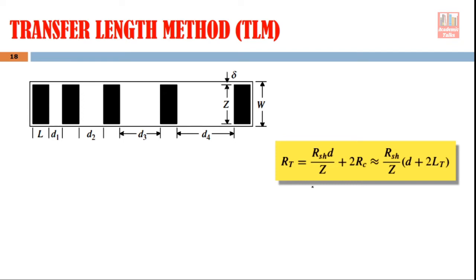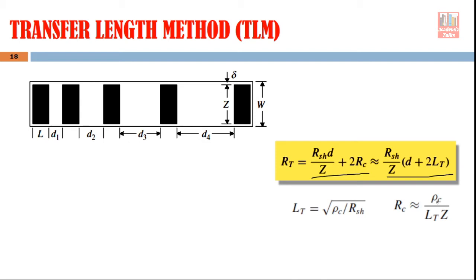This equation can be simplified further. To understand how we reach the simplified form, instead of Rc we substitute the equation Rho_C divided by (Lp × Z). Then the value of Rho_C is obtained from the relation: taking the square root of both sides gives Lp² × sheet resistance = Rho_C. Substituting this value and solving, we reach the final simplified equation.